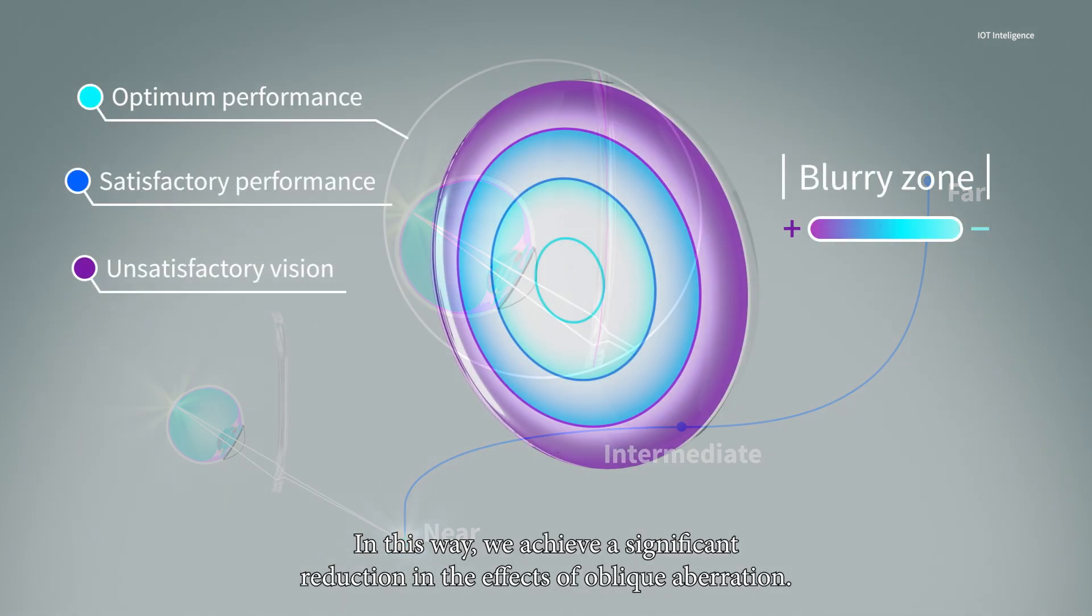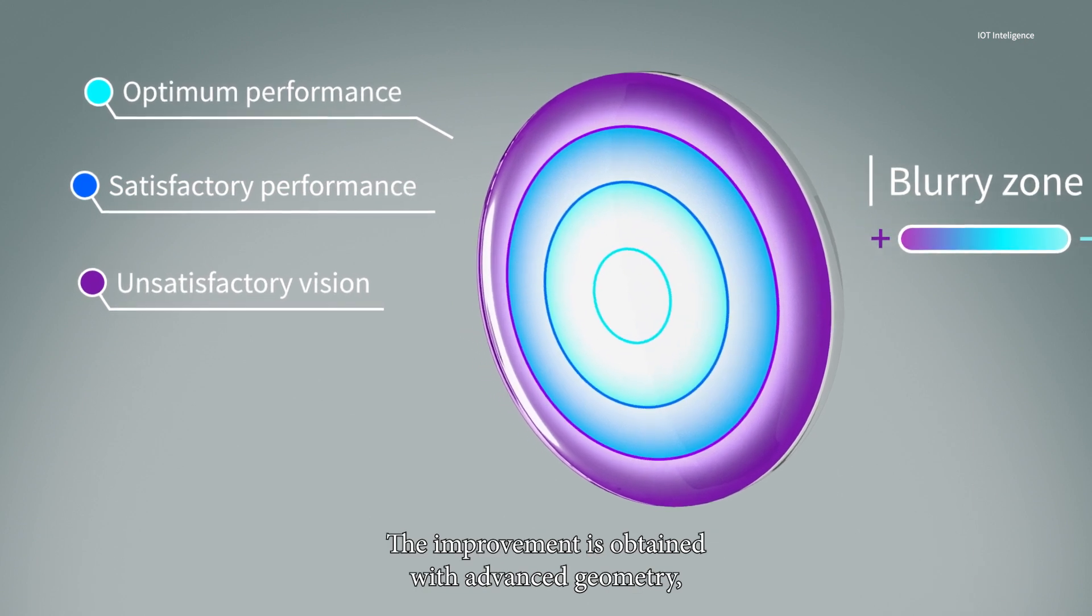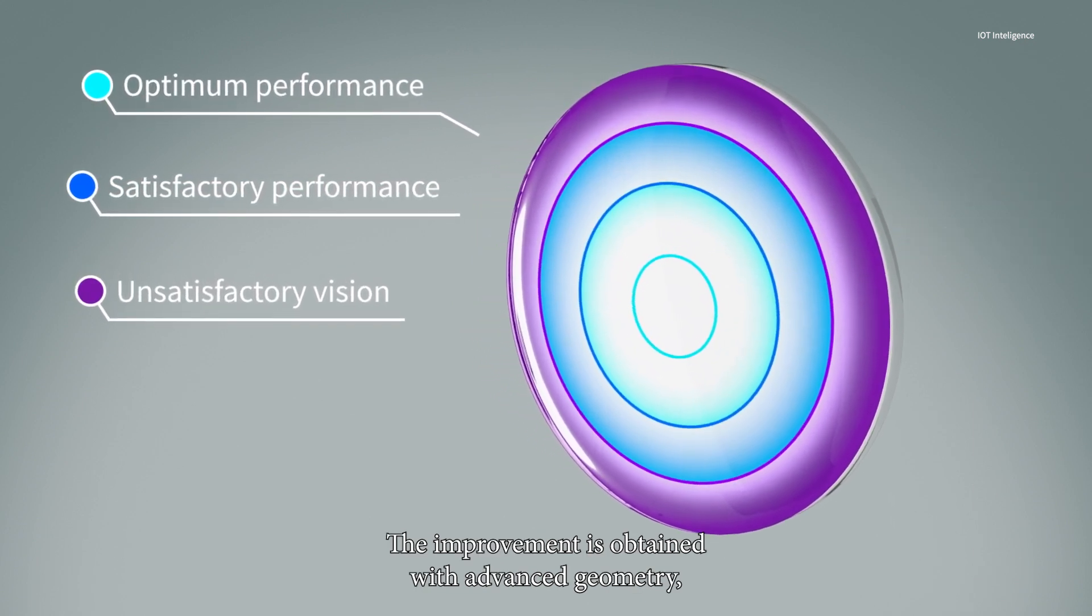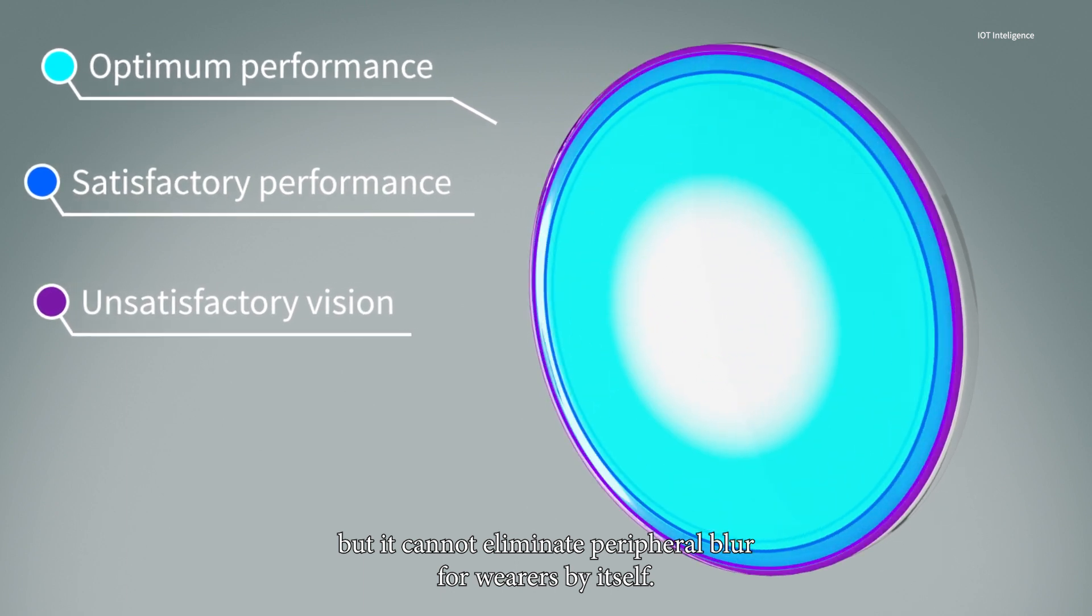In this way, we achieve a significant reduction in the effects of oblique aberration. The improvement is obtained with advanced geometry, but it cannot eliminate peripheral blur for wearers by itself.